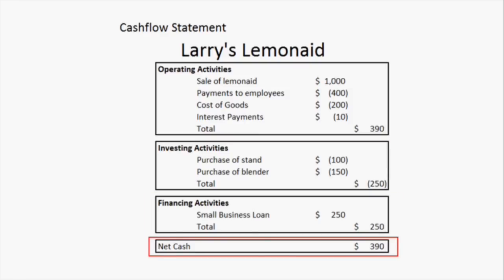There we have net cash at the bottom of $390. Now the company may have reported $390 as the net profits for this period, but it's important to understand that there was a small business loan of $250 that gave this company extra money. So that's how you read a cash flow statement. This is a simple example, but it should get you through more complicated cash flow statements and give you an idea of what those different sections mean and how they could be applied to understand how a company uses cash to make money and where it spends money.